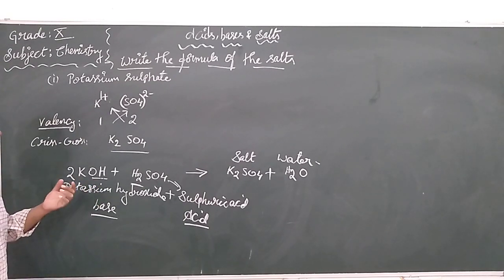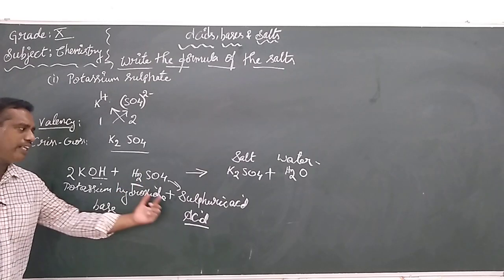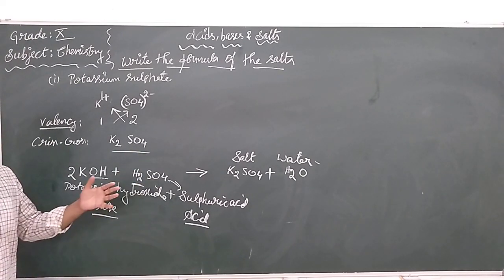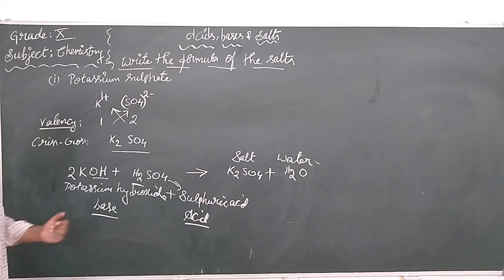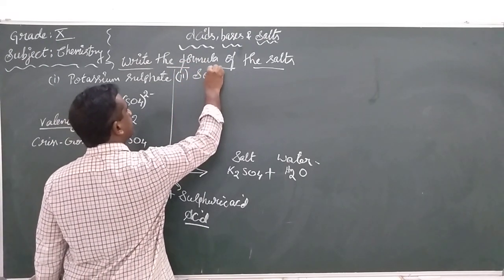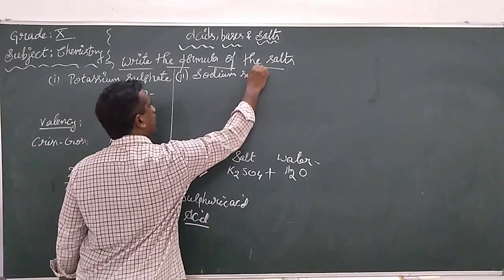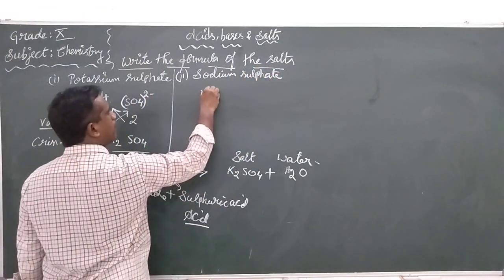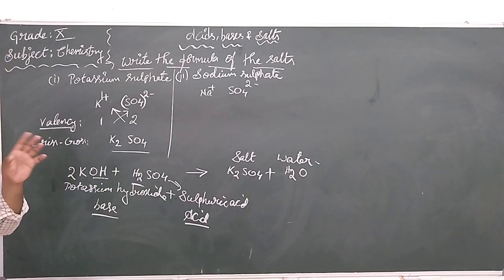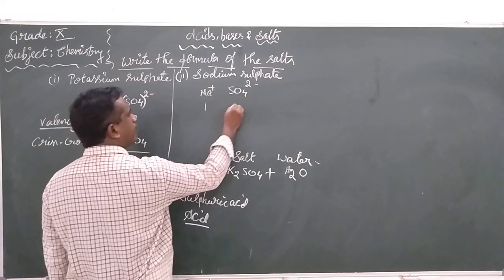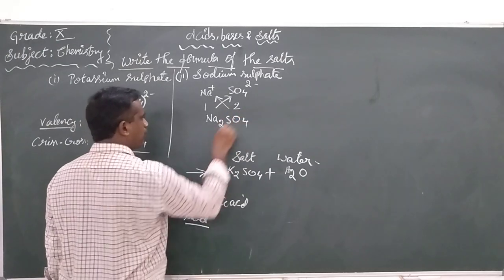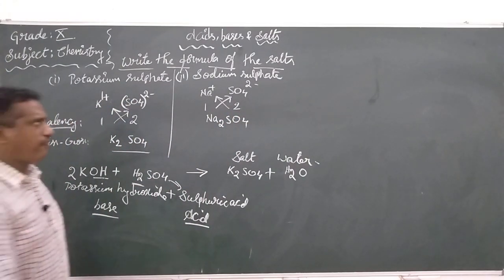We can know by recognising that the acid provides the sulfate and the base provides the potassium metal. Now try to create a formula for sodium sulfate: Na+ and SO4 2 minus — crisscross the valences — what you get is Na2SO4, sodium sulfate.